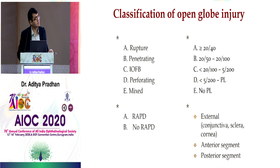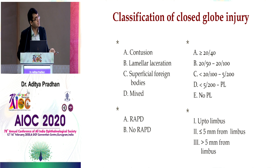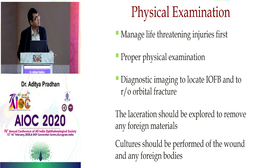To classify open globe and closed globe injury: categories include rupture, penetrating, intraocular foreign body, perforating, or mixed injury. You assess the grade of vision, pupillary reaction — RAPD is a poor prognostic factor — and examine the conjunctiva, sclera, cornea, anterior and posterior segment, and extent of injury. More severe injury and greater involvement from the limbus leads to poorer final outcome, helping in prognostication and counseling.